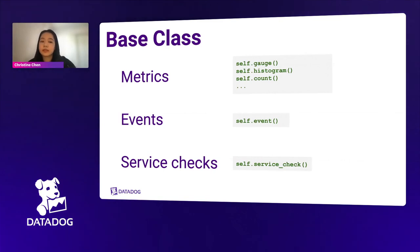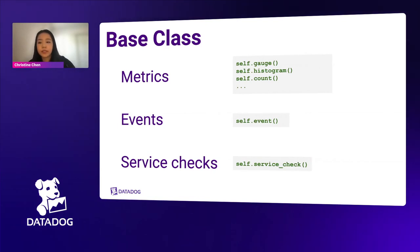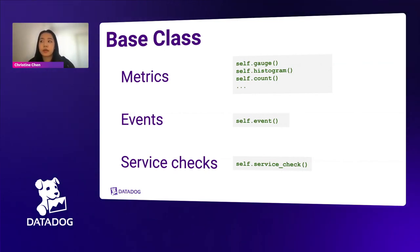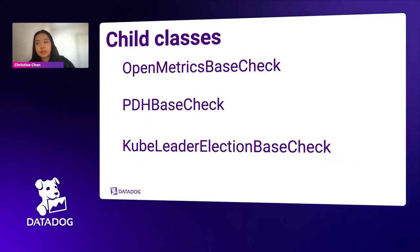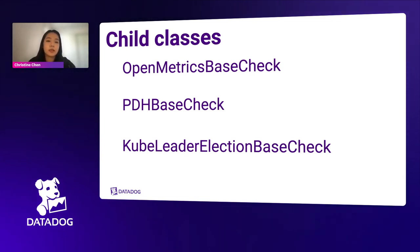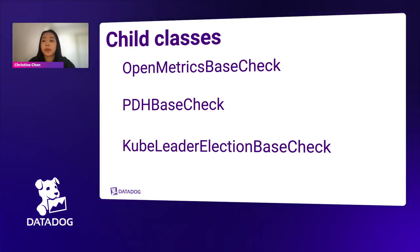The base class contains functionality and utilities necessary for writing an integration. There is metrics submission for different types like gauges, counts, and histograms, as well as events based on changes, and service checks to provide the status of the integration itself. For more advanced needs, beyond the generic check, we also provide other base classes. The OpenMetrics base check provides structure and helper functions to collect metrics, events, and service checks exposed by Prometheus.